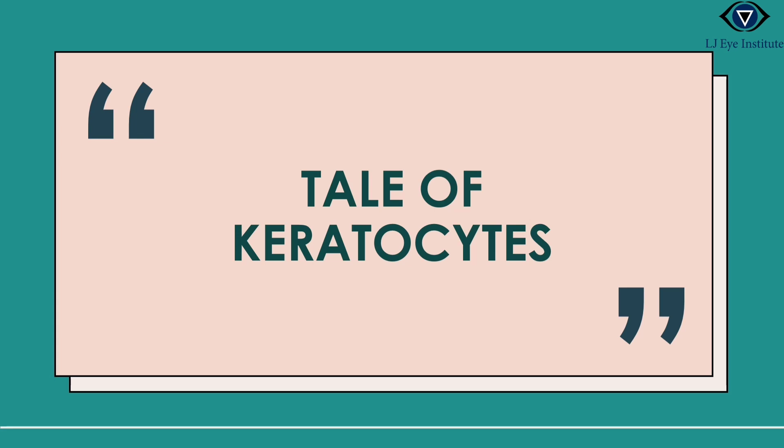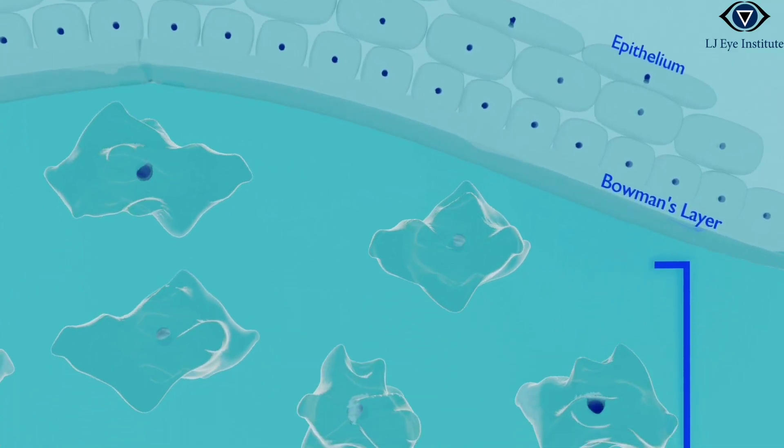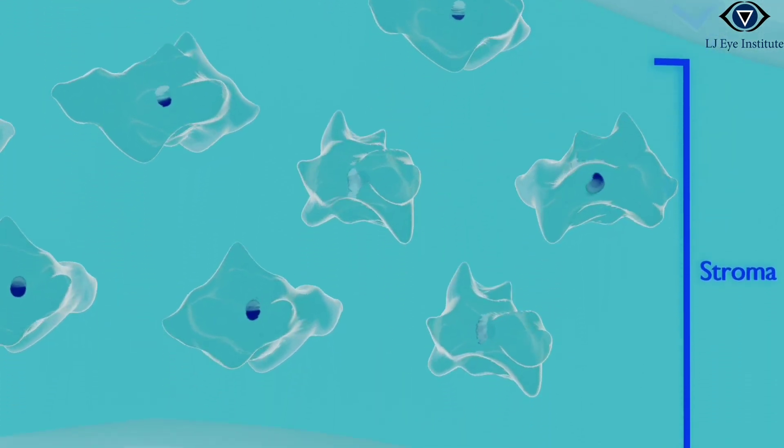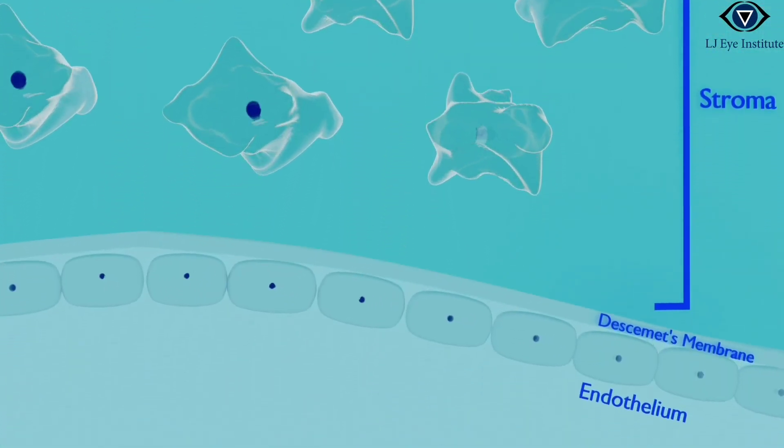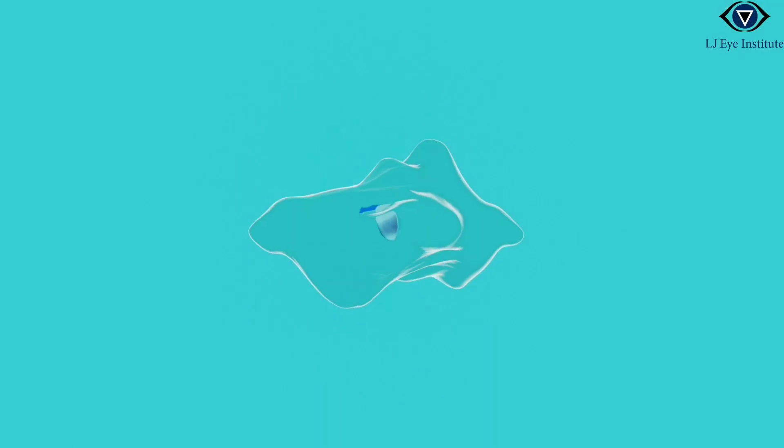Allow me to introduce the keratocyte, an essential hero in the vast world of cornea. Imagine keratocyte as a born artisan who emerges from the cranial neural crest cells and makes its home in the mesenchyme.